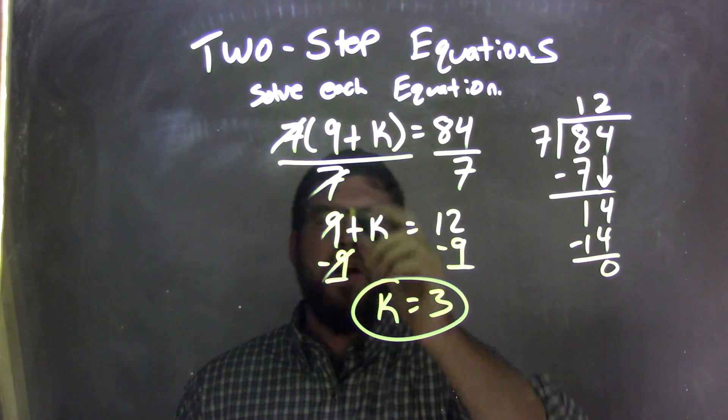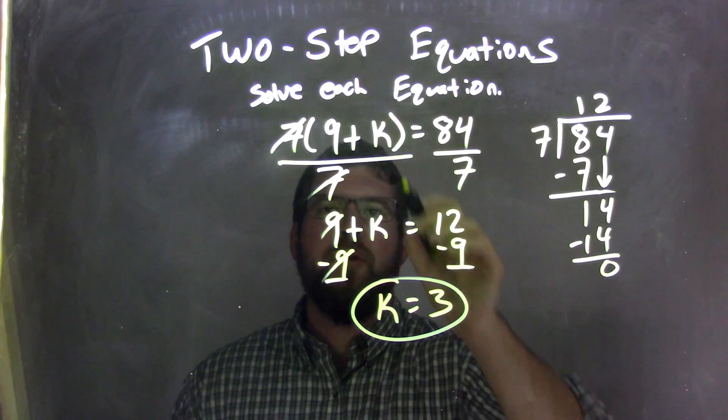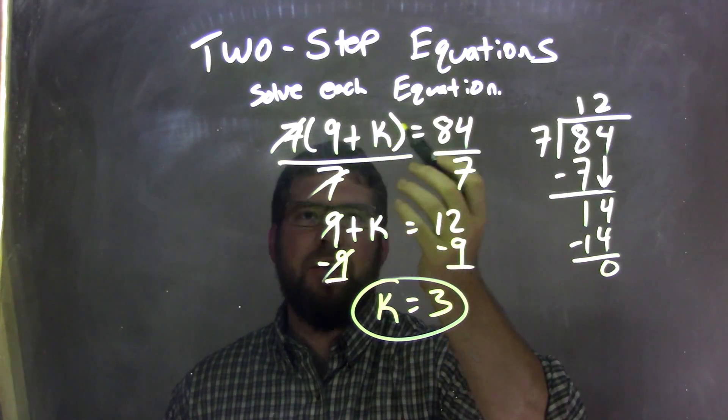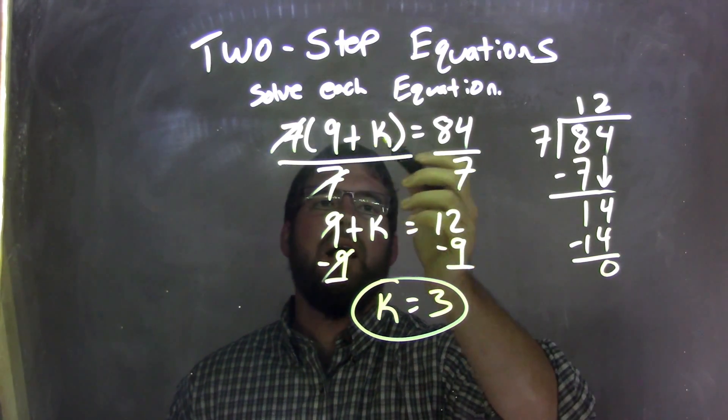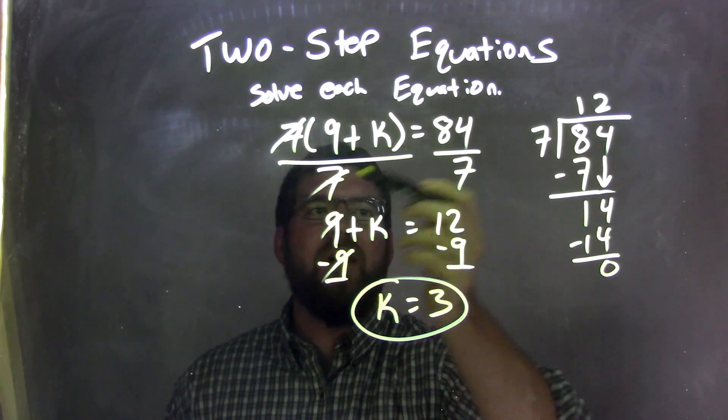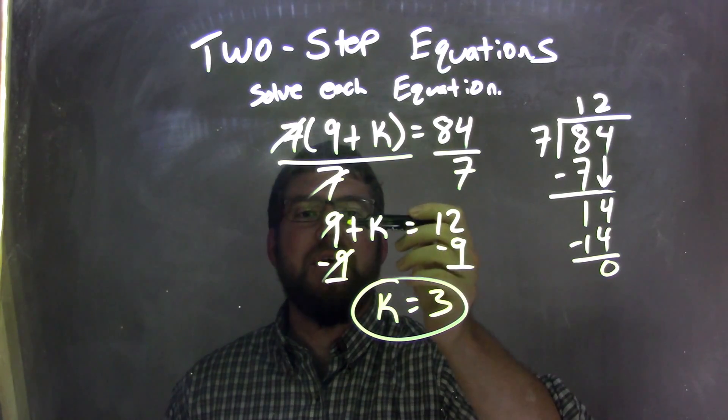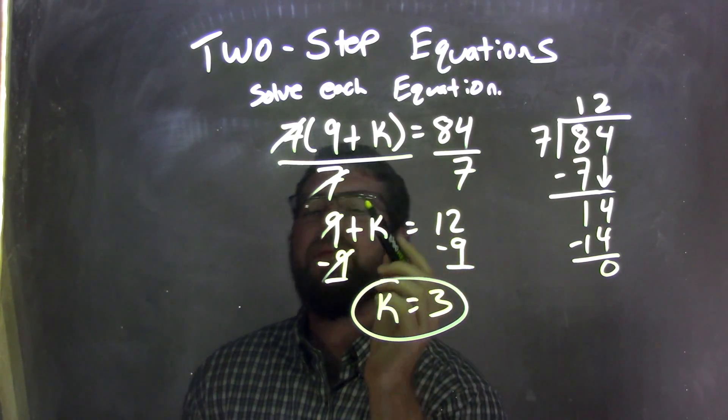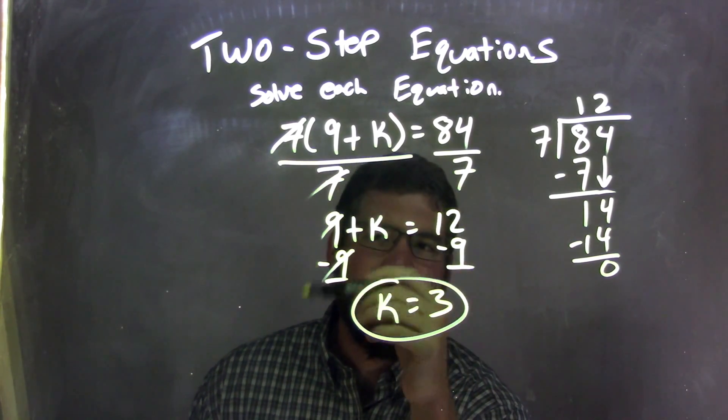So let's recap. We had 7 times 9 plus k equals 84. 9 plus k is in parentheses. That multiplication is going on, so I'm going to divide by 7 on both sides. The 7s on the left cancel. Leave me with 9 plus k, and at that point, I don't need the parentheses anymore.